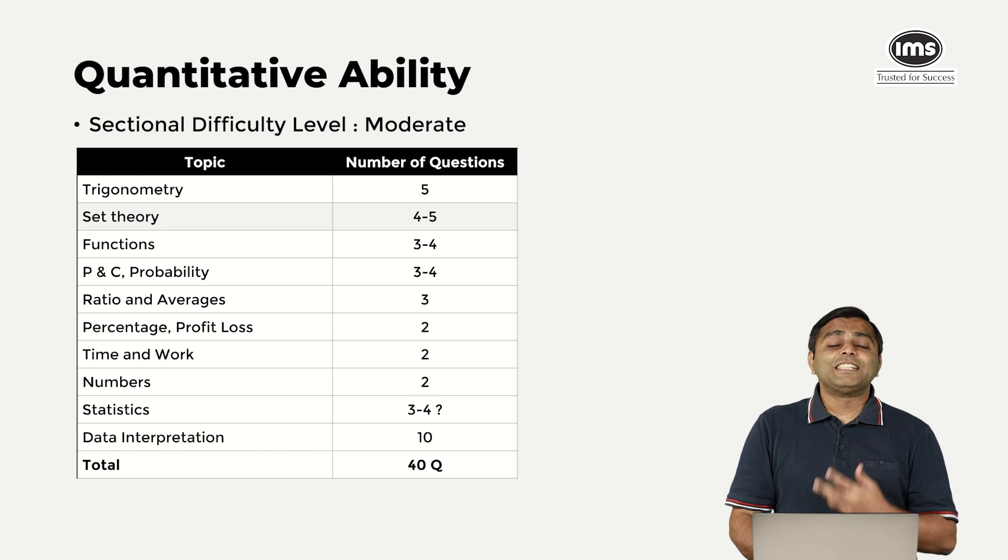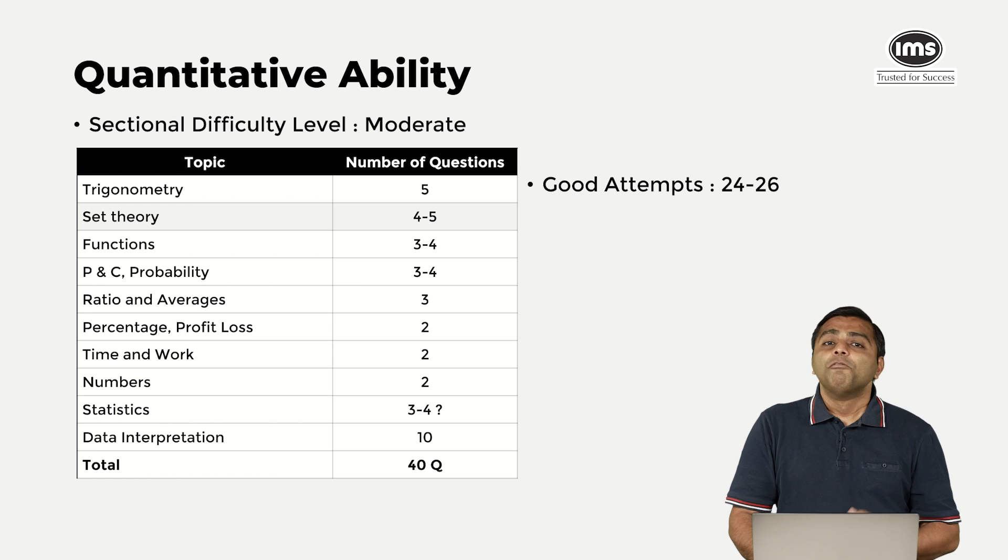Questions on functions and trigonometry can be solved using shortcuts. So we will discuss that a little later. This is how the spread has been of the 40 questions this year. We think the good attempts can be anywhere between 24, 25, 26, 27, or 25 also should be alright for this particular attempt.